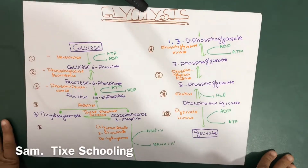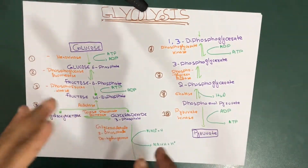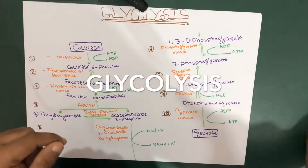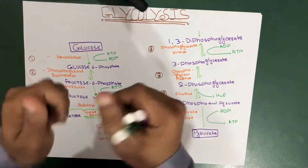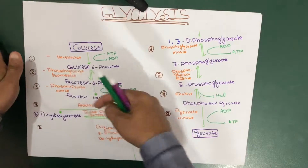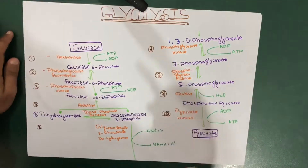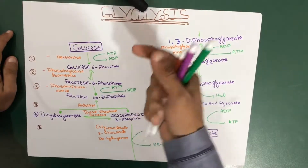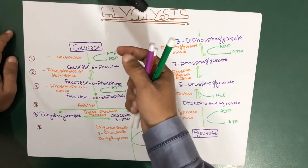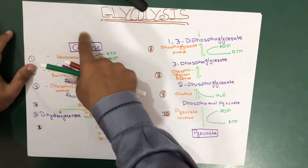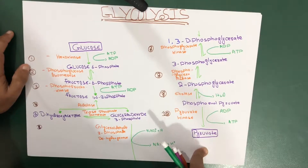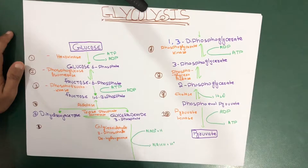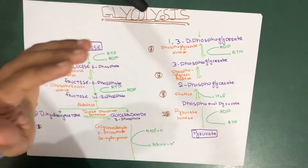Hello YouTube, this is Sam from Tig's Schooling. In this session we're going to talk about glycolysis. You might think glycolysis is a very hard topic to understand, but it's actually very easy because it is based on only 10-step reactions, using only 10 enzymes, starting from glucose until we get pyruvate.